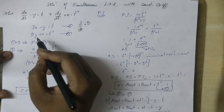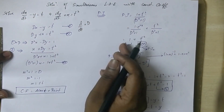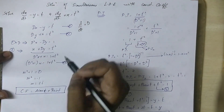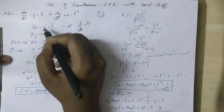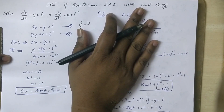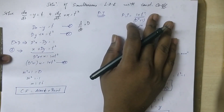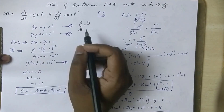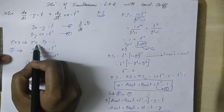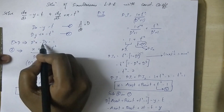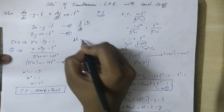Now we need to cancel one variable — either x or y. In this case we will cancel y. Since dy is not directly available, we differentiate the first equation with respect to t, giving us D squared x minus Dy equal to 1 (differentiation of t).